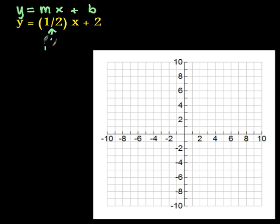So my m here is one-half. m means the slope, so the slope of this line is going to be one over two.